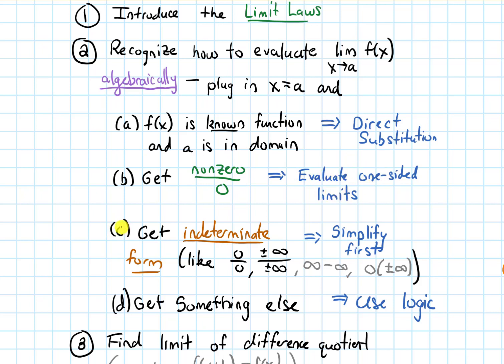The third case — and this is the main case we'll see — is if we get what's called an indeterminate form. Those will be things like zero over zero, or plus or minus infinity over plus or minus infinity.